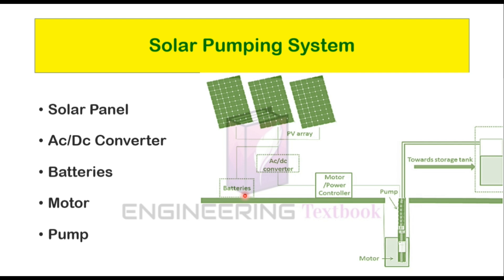The battery ensures the system is working whether in sunlight or not. Next is the motor or power controller, which adjusts the system parameters to meet user needs and shields the pumping system. The pump is an important part of this system. This pump has various types such as sump pump, booster pump, circulating pump, and submersible pump. We will see all these types of pumps in further videos.